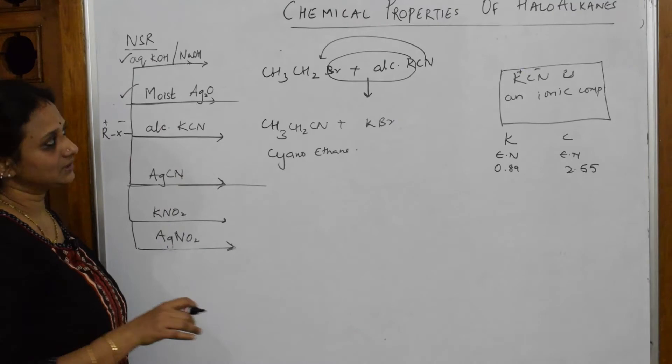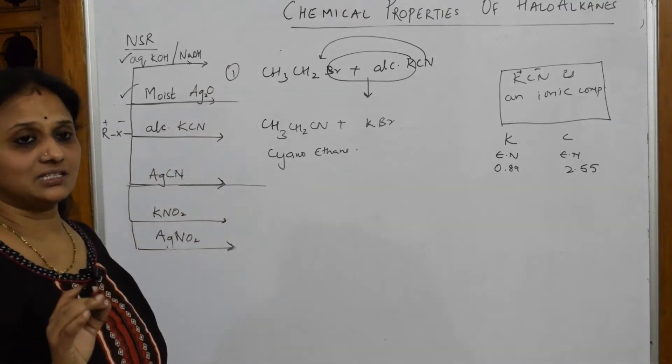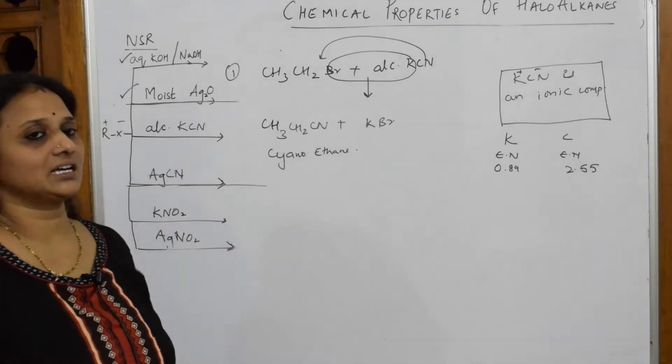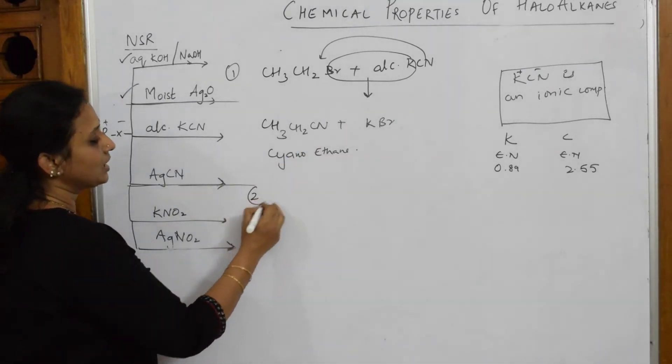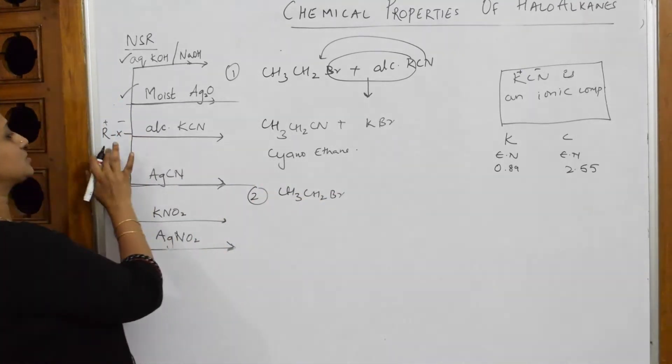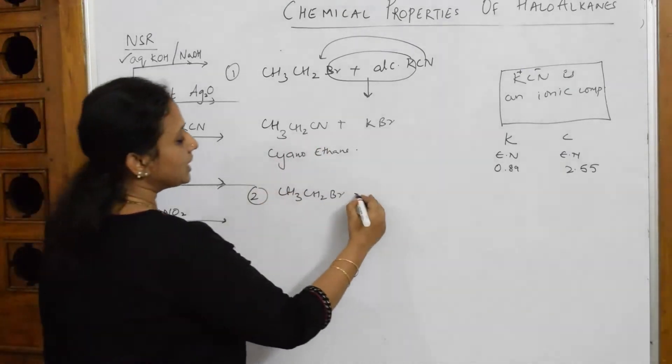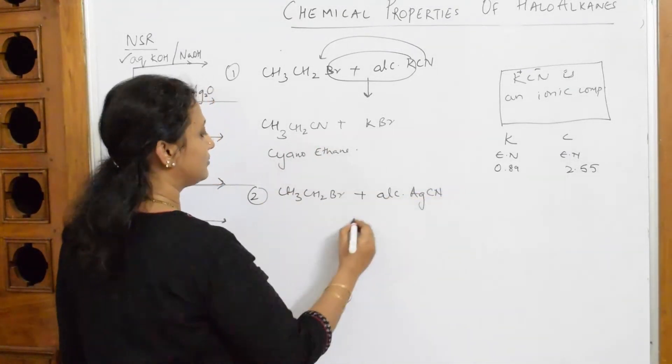Now I'll come back to AgCN. Your board tries to question you at this point because KCN, I said it is ionic compound, done. But let us see the next reaction. They've given me CH3CH2Br. Instead of this, I'm going to add alcoholic AgCN.